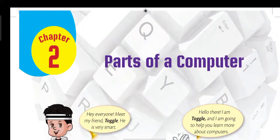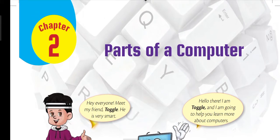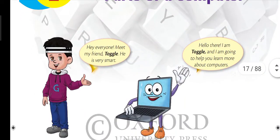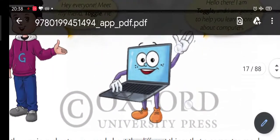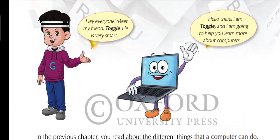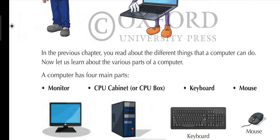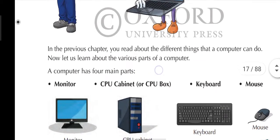Good morning students. Hope you all have seen the previous video I shared, which was explaining the parts of a computer. Today we will go through the textbook for the parts of computer and meet Toggle. Toggle says: hello there, I am Toggle and I am going to help you learn more about computers. In the previous chapter you read about the different things a computer can do. Now let us learn about the various parts of computer.